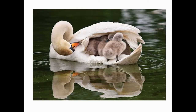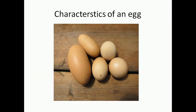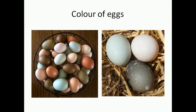Most birds take care of their young ones — they feed them and teach them how to fly and fend for themselves later on. Now we shall look at the characteristics of an egg in detail. The eggs of birds are either oval-shaped or round, and they can be different sizes and colors such as brown, grey, blue, black, etc.